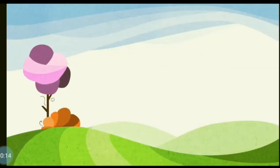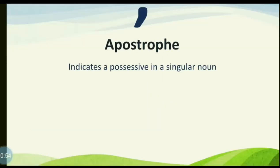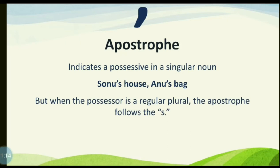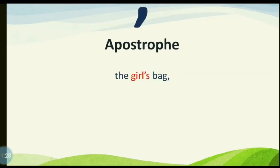Now we move on to the apostrophe. It indicates possession in a singular noun — for example, 'Sonu's house' means the house of Sonu; 'Anu's bag' means the bag that belongs to Anu. When the possessor is a regular plural, the apostrophe follows the S — for example, 'the girls' school' belongs to many girls, while 'the girl's bag' belongs to one girl.